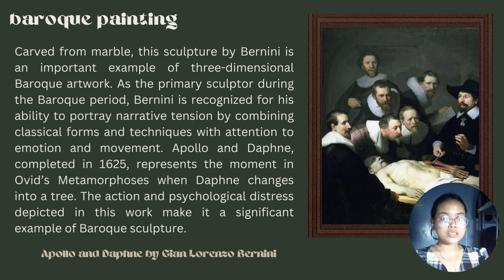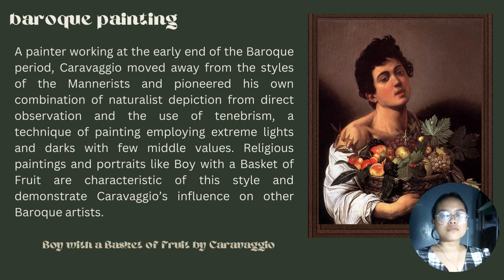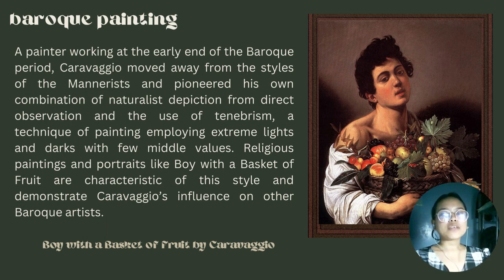The action and psychological distress depicted in this artwork make it a significant example of baroque culture. Working on the early end of the baroque period, Caravaggio moved away from Mannerist styles and pioneered his own combination of naturalistic depiction through direct observation and the use of tenebrism — a technique employing extreme lights and darks with few middle values. Religious paintings and portraits like Boy with a Basket of Fruit are characteristic of this style and demonstrate Caravaggio's influence on other baroque artists.